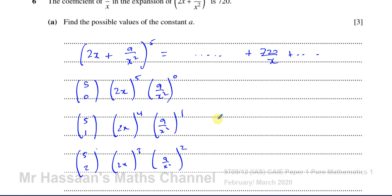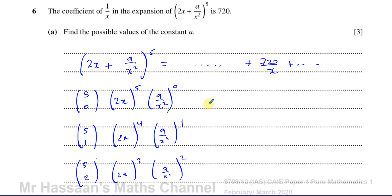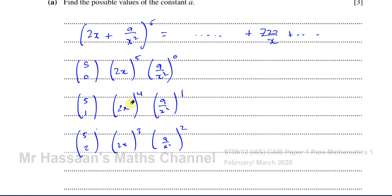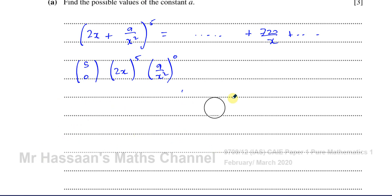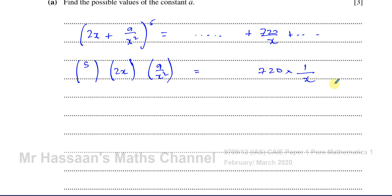But here we're not asked to find the terms — we're asked to find the value of a when we know the coefficient of 1/x is 720. So we have to think about this differently. Given what we were told, I know here we're going to have 5 in both positions, and these two numbers have to add up to 5. The powers should be such that what we're left with has x in the denominator — 1 over x.